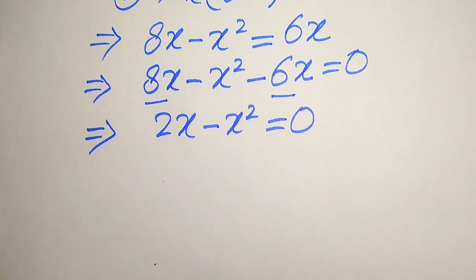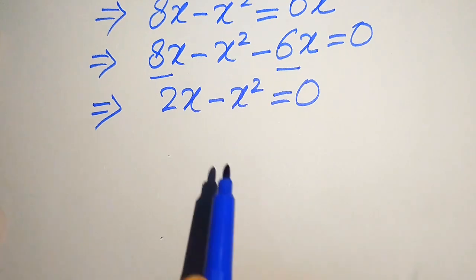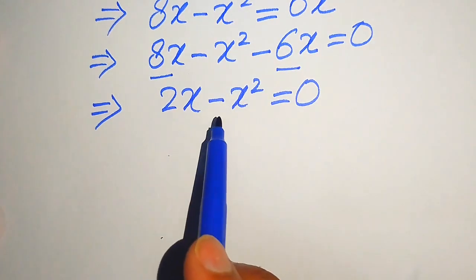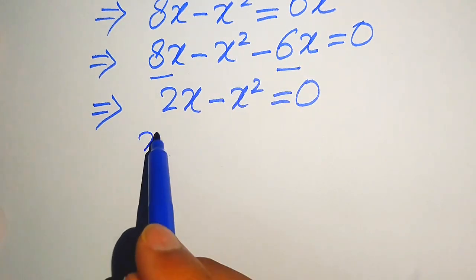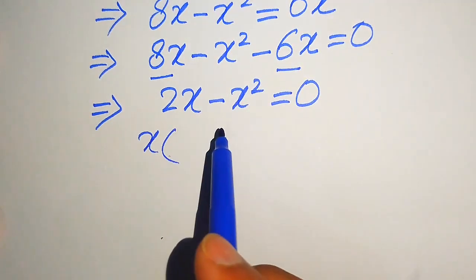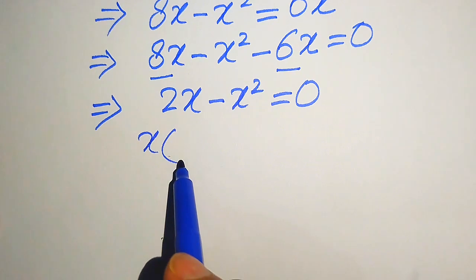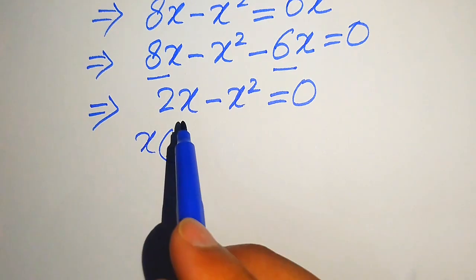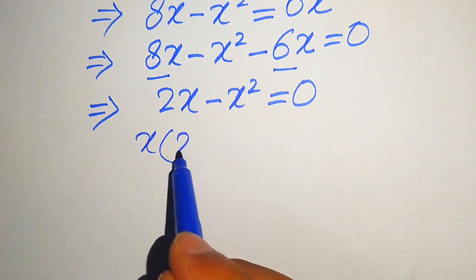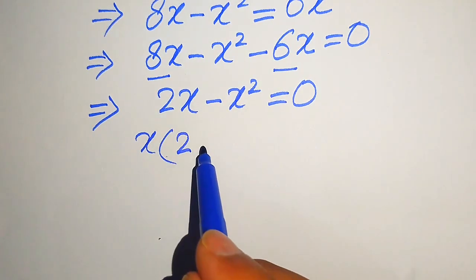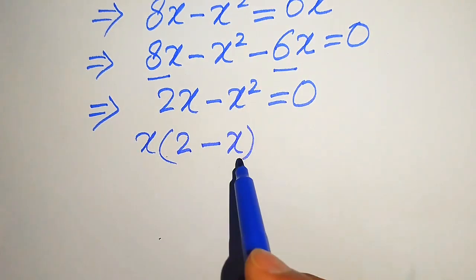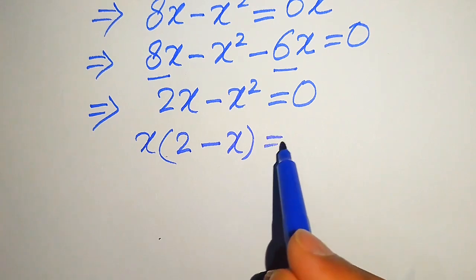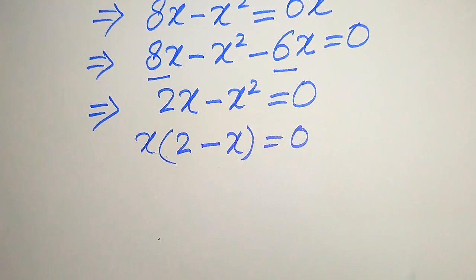Both terms involve x, so we take x as a common factor. This gives us x times (2 minus x) equals 0.